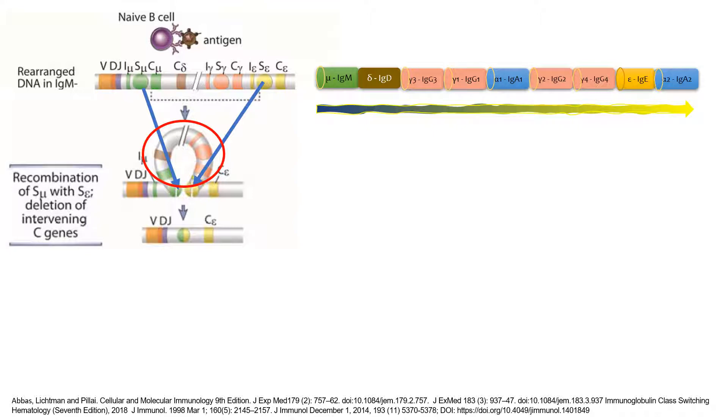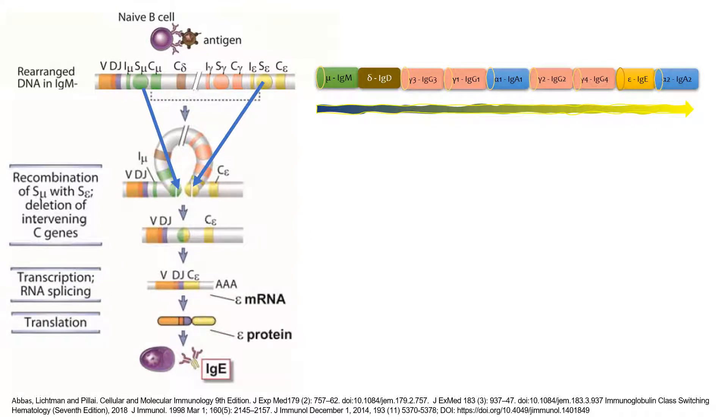Now this B cell has the variable region, diversity region, the junction region, and the constant gene for the epsilon or IgE isotype. This particular cell has now recombined the genes and switched to IgE, and has spliced out all the other genetic material. This is what allows transcription of the RNA that's already spliced for IgE, and the translation is into an IgE antibody.